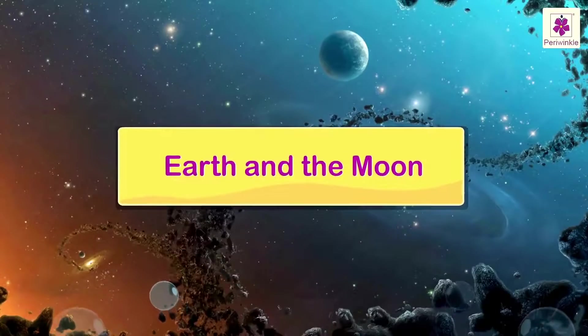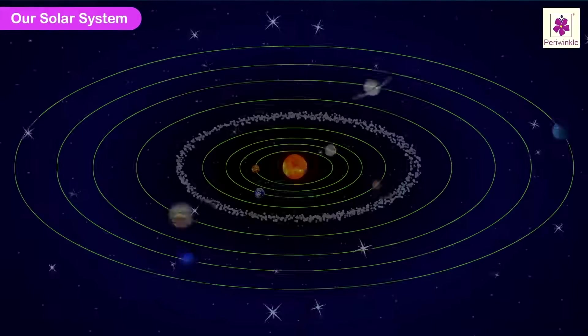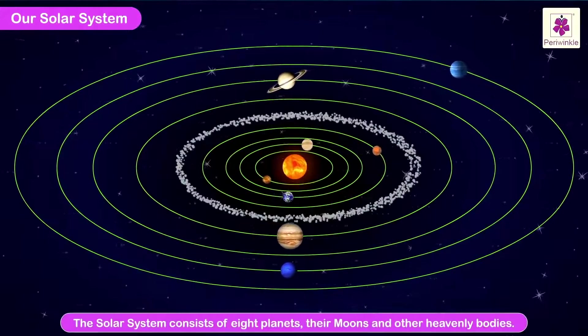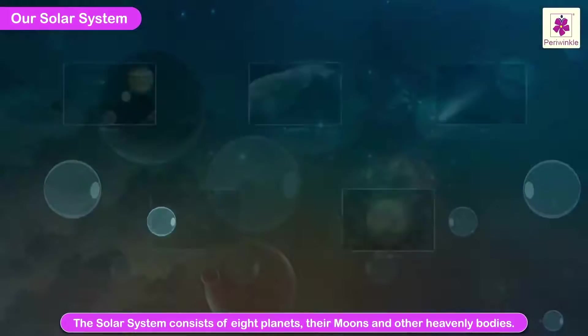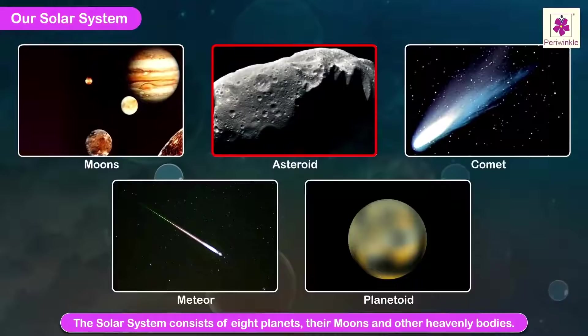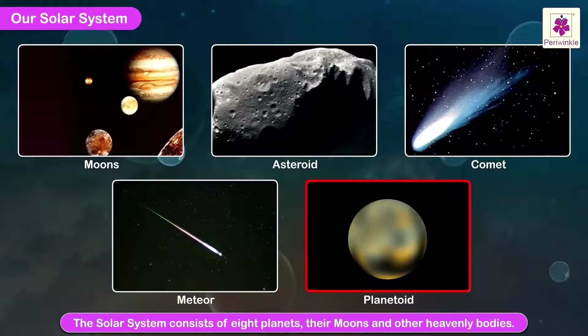Earth and the Moon: Our Solar System. We know that the solar system consists of eight planets, their moons and other heavenly bodies such as asteroids, comets, meteors, planetoids, etc.